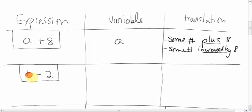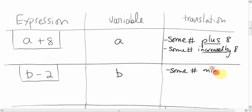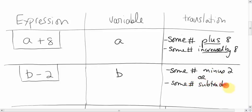How about 'B minus 2'? The variable is obviously B. What does it mean? It just means some number minus 2. You could also say: some number subtracted by 2, some number reduced by 2, or some number less 2. There are lots of different ways to say minus: subtracted by, decreased by, reduced — all sorts of words.